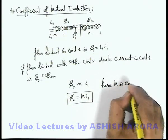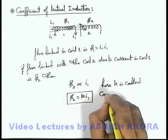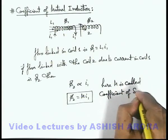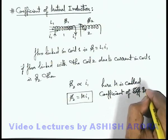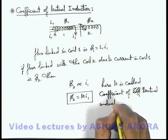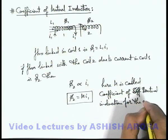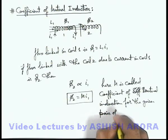Here M is called coefficient of mutual induction for the given pair of coils.